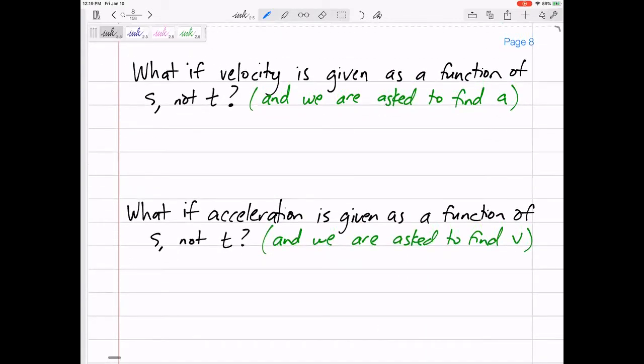Time would be too easy if everything's in terms of time. What if your velocity was given as a function of s, as a function of position? If velocity was given in terms of time and I'm asked to find acceleration, I just take the derivative. But if velocity was given in terms of s, can I use this equation?